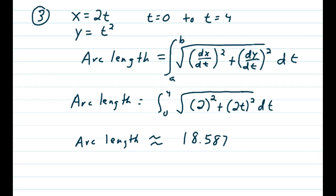So again, the arc length formula is an integral from a to b of the square root of dx/dt squared plus dy/dt squared. And arc length is then the integral from 0 to 4, that's given to you, square root of, well...